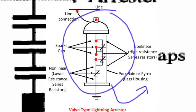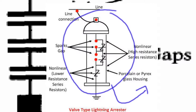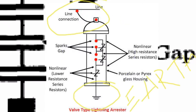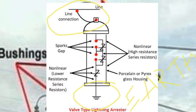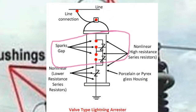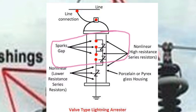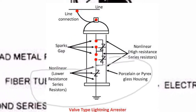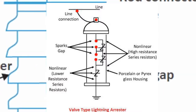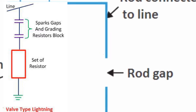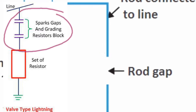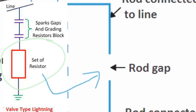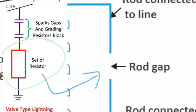Now moving to the diagram. This is the outside structure of the valve type lightning arrestor. It has a porcelain or glass body, one end connected to the line and the other earthed. This body contains a spark gap made up of resistors, including non-linear resistors. Checking the internal part of the valve arrestor: the spark gaps are in series and contain a set of resistors called valves. Non-linear silicon carbide resistors are provided across the gap.